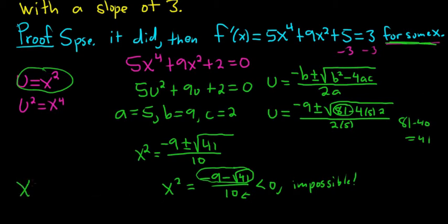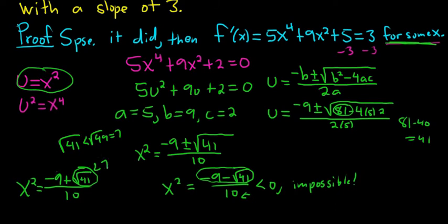The other case is when x squared is equal to negative 9 plus the square root of 41 over 10. This is impossible, and here's why. The square root of 41 is less than the square root of 49, which is equal to 7. So this number here is less than 7. So if you take negative 9 and add it to a number less than 7, you're going to get a negative number. So it's negative over positive, so it's negative. Same deal. If you solve for x, you're going to get an i. It's not a real number, so impossible.